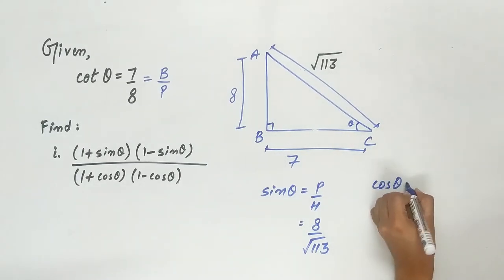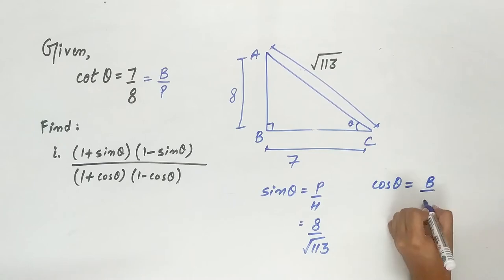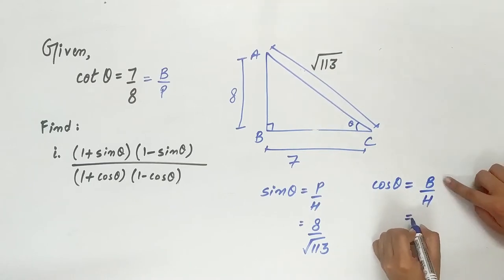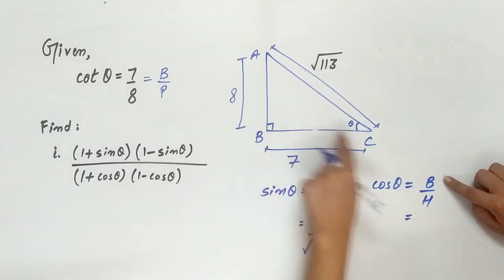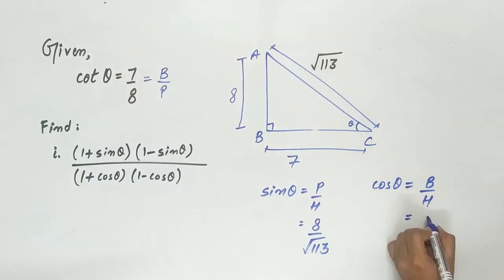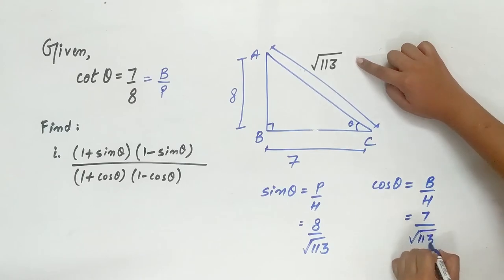Hypotenuse square root of 113. Cos theta is equal to base upon hypotenuse. Base is 7. Then hypotenuse is square root of 113.